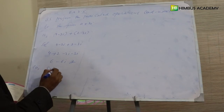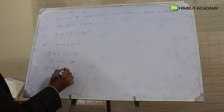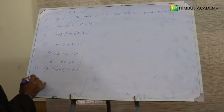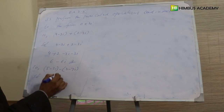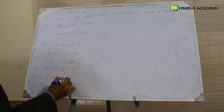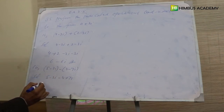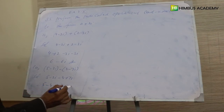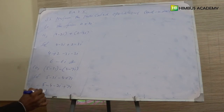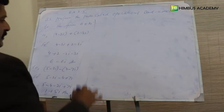Number 2: 5 minus 2 iota minus 4 minus 7 iota. یہ ہو گیا 5 minus 2 iota minus 4 plus 7 iota — جس کا answer 1 plus 5 iota ہے۔